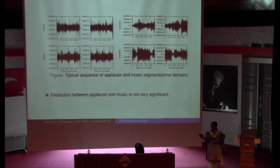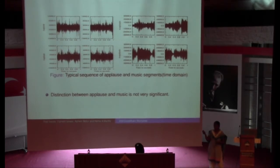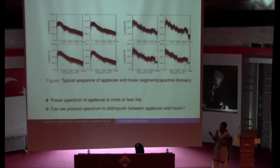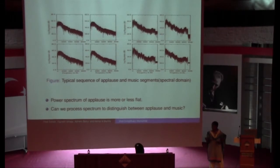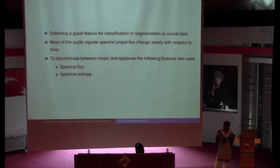Looking at the characteristics of music and applause in time domain representation: the applause segments and music segments can be discriminated in the time domain, but that discrimination is not significant. Moving to the spectral domain representation, the applause segments are more or less flat while the music segments have some structure. So I am using spectral domain features — spectral flux and spectral entropy — to discriminate between applause and music.